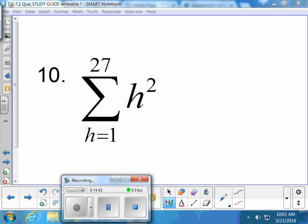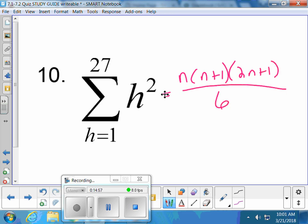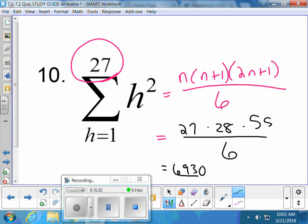Over on 10. What shortcut can I use? It's the third one because the equation is a variable being squared. N times N plus 1 times 2N plus 1, all over 6, where N is the upper limit of the series. So N is 27 in this case. It would be 27 times 28 times 55, all over 6. 6,930. That looks about right to me.